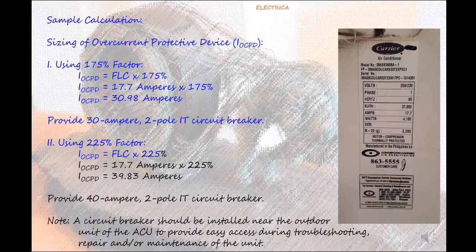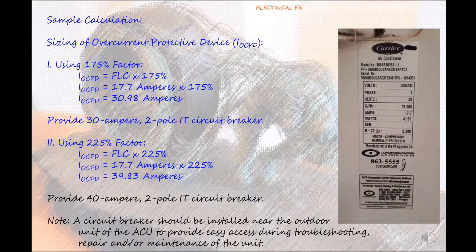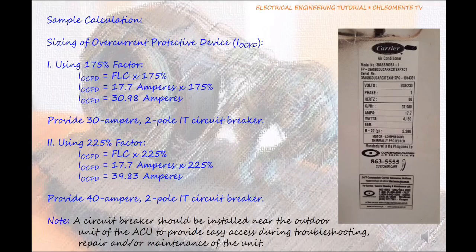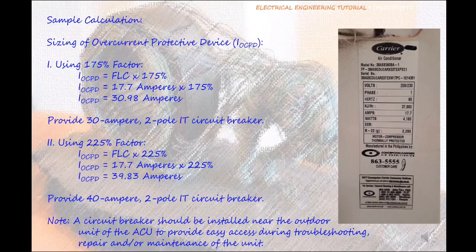If the 175% factor will not be able to carry the compressor motor starting current, IACD equals FLC multiply to 225%. IACD equals 17.7 amperes multiply to 225%. IACD equals 39.83 amperes. Provide 40 amperes, 2 pole inverse time circuit breaker. Note: A circuit breaker should be installed near the outdoor unit of the ACU to provide easy access during troubleshooting, repair and or maintenance of the unit. In this circuit, we will provide two 40 ampere circuit breakers, one near the outdoor unit and the other one in the main distribution panel.